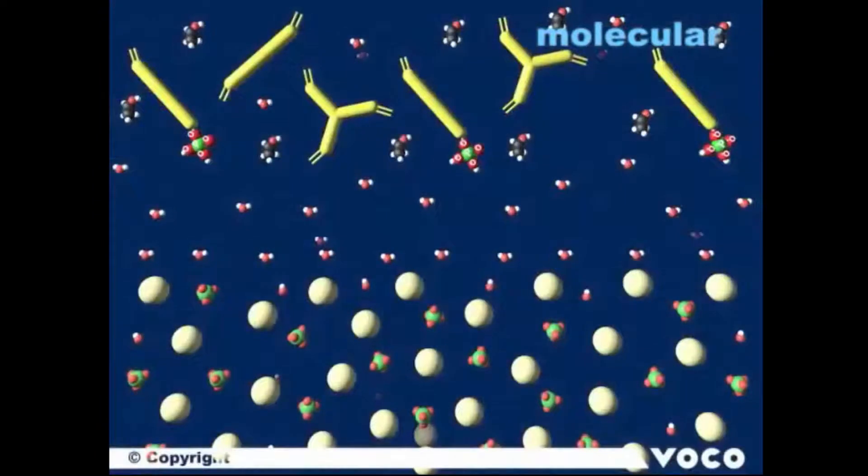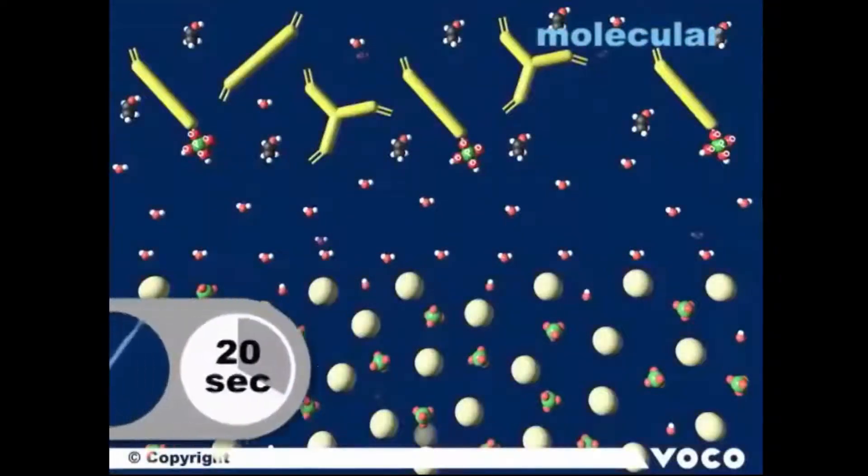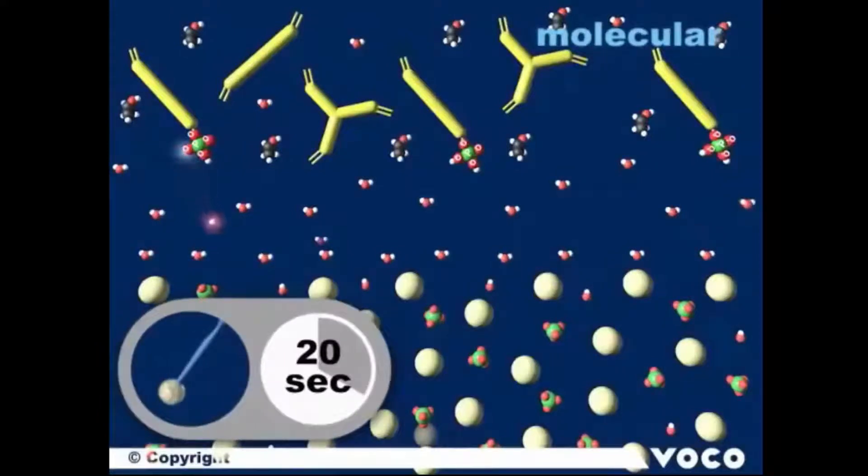Once again, for repetition, the acidic adhesive monomers, the cross-linking monomers, and the solvents ethanol and water. During the step of rubbing in for 20 seconds, first all the acid gets reactive. The protons disassociate and react with the hydroxy ions from the hydroxyapatite to form water. As a result, a first demineralization of the tooth substance takes place.